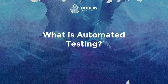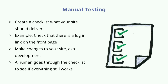We're going to talk first about the theoretical background of automated testing. If you have a website and want to make sure it works, you can build a checklist — for example, that there is a login link on your front page. After making changes, you can check manually. Manual testing means a human goes through a checklist, but this is a lot of tedious work and humans make mistakes.